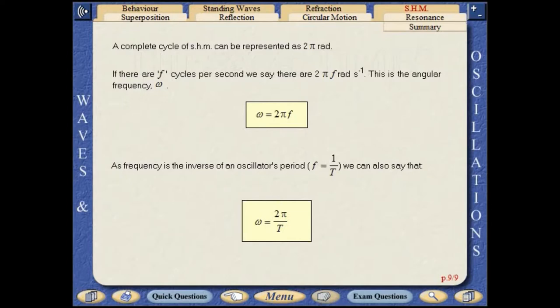A complete cycle of simple harmonic motion can be represented as 2 pi radians. If there are f cycles per second we say there are 2 pi f radians per second.